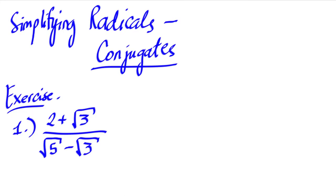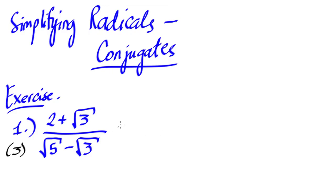Hi everyone, we're now on our next video in simplifying radicals. In the last video, I assigned this as your exercise — this is actually number three from the previous video. The problem is: two plus square root of three, all over square root of two minus square root of three. We're going to answer this using the concept of conjugates.